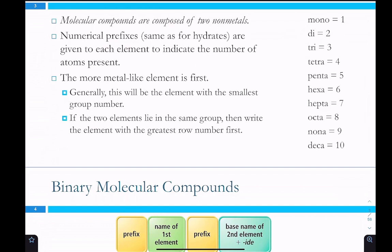If two elements are in the same group, then you write the element with the greatest row number first. So, if you had nitrogen, phosphorus, then you would write phosphorus before nitrogen. If they're in the same row, then carbon comes before nitrogen. And then hydrogen just gets slipped in there.